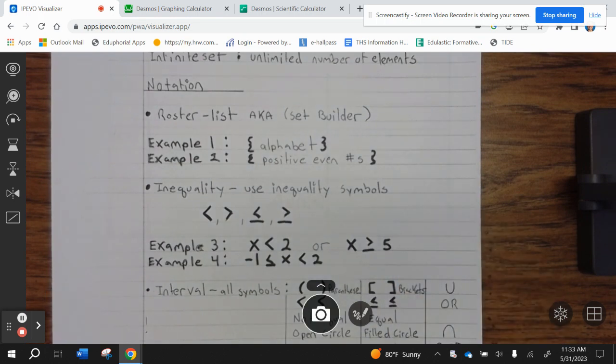Notation. Roster lists, a.k.a. set builder. Example 1, alphabet. Example 2, positive even numbers.